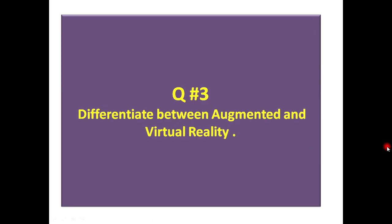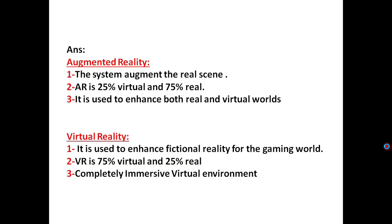Question number three: Differentiate between the augmented and virtual reality. Here I have written three points. Augmented reality: the system augment the real scene. AR augmented reality, AR se aapne confused nahi hona agar exam me aata hai. AR is 25% virtual and 75% real. It is used to enhance both real and virtual world. Virtual reality: it is used to enhance fictional reality of the gaming world. VR is 75% virtual and 25% real, completely immersive virtual environment.